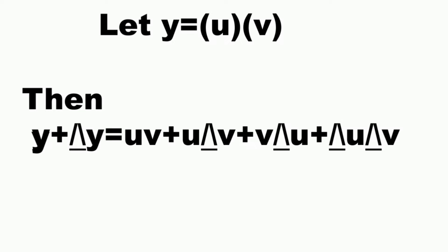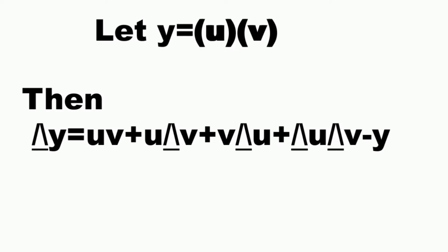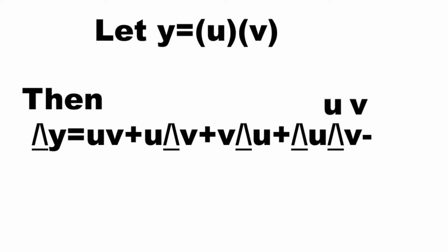Transpose y to the right, so delta y is equal to uv plus u delta v, plus v delta u, plus delta u times delta v, minus y. But y equals uv, so delta y equals uv plus u delta v, plus v delta u, plus delta u times delta v, minus uv.